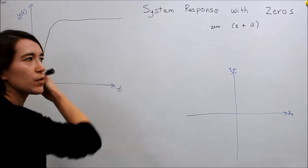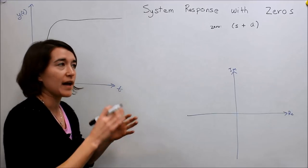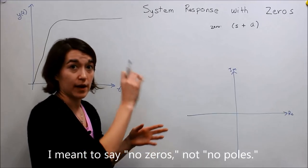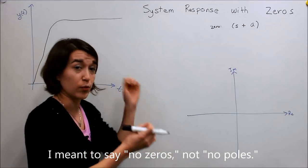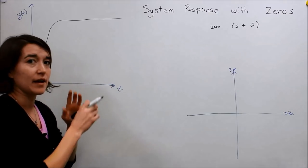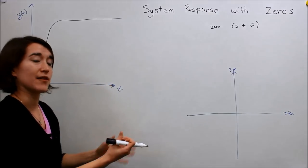And those examples we gave earlier in that video had no poles in them, so they just had a constant in the numerator. So now we're going to add a zero and see how that affects it.